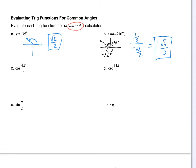Cosine of 4π/3 — well, 4π/3 is one of our known angles, and it puts us in quadrant three. Cosine references the x-coordinate. So we want the x-coordinate at 4π/3. It should be negative — negative one half. That's it.